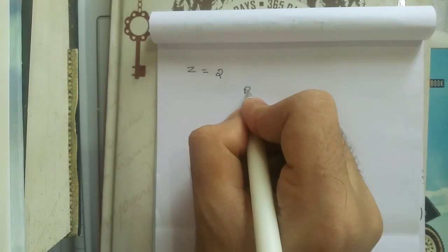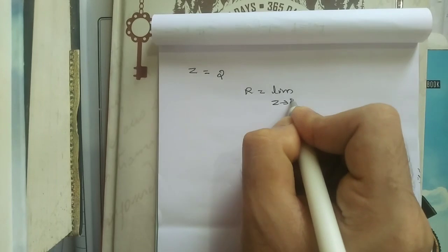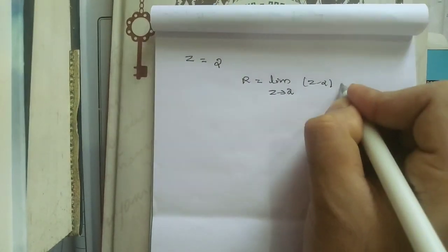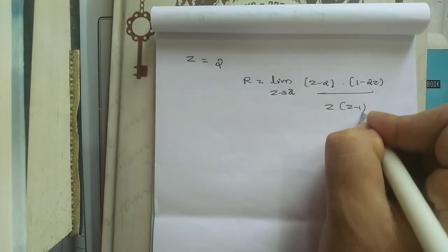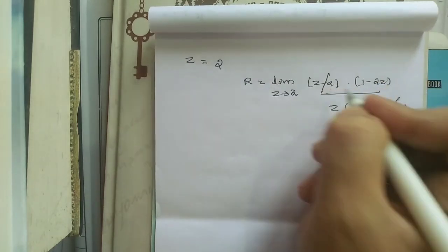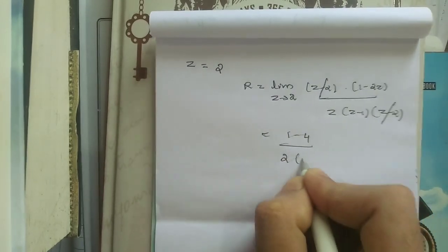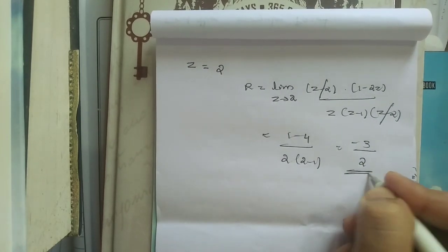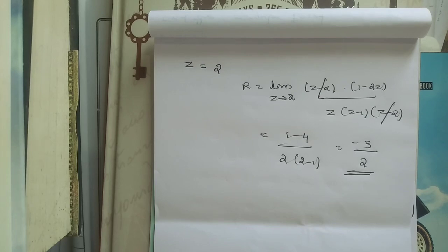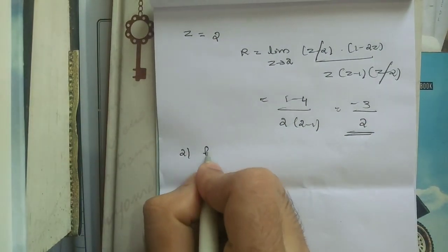For z = 2, the residue is R = limit as z → 2 of (z − 2) · (1 − 2z) / [z(z−1)(z−2)]. The (z−2) terms cancel, and substituting z = 2 gives (1 − 4) / [2 · (2 − 1)] = −3/2. This is how we calculate the residue at each singular point.